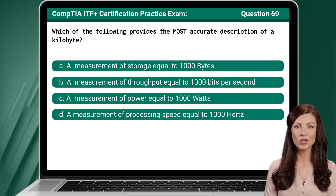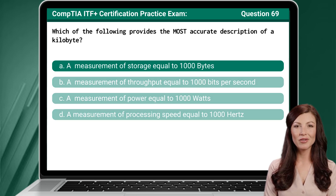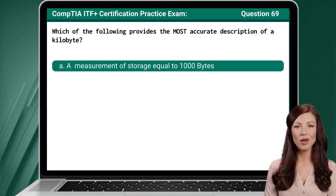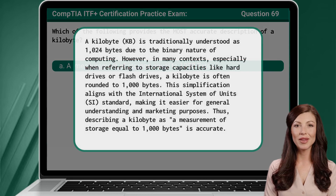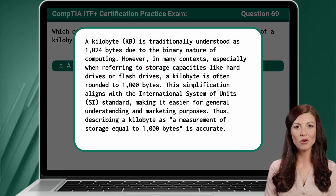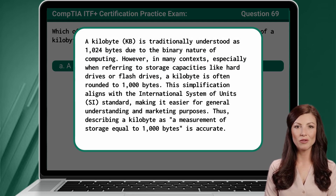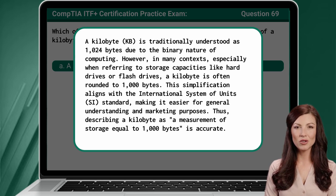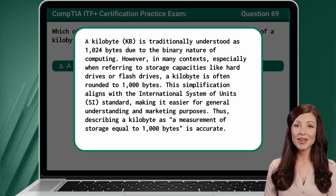Question 69. Which of the following provides the most accurate description of a kilobyte? The answer is A: A measurement of storage equal to 1000 bytes. A kilobyte is traditionally understood as 1024 bytes due to the binary nature of computing. However, in many contexts — especially when referring to storage capacities like hard drives or flash drives — a kilobyte is often rounded to 1000 bytes. This aligns with the International System of Units standard, making it easier for general understanding and marketing purposes.